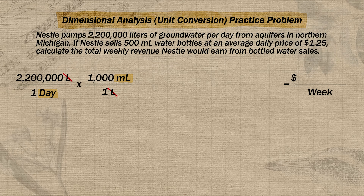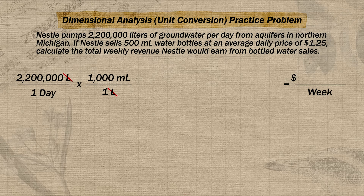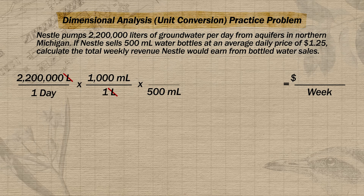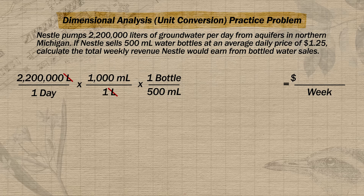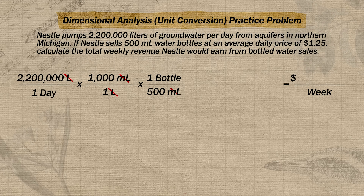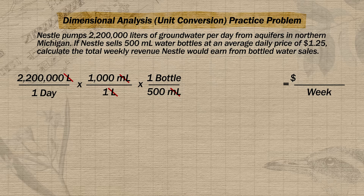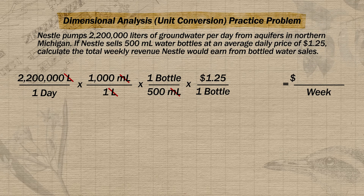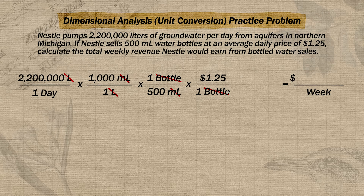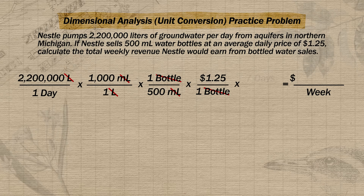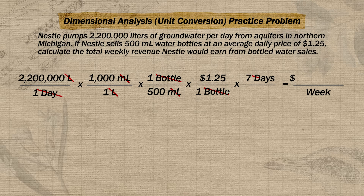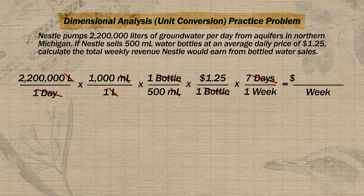Next, we convert milliliters to bottles of water. Since milliliters is on top, we put 500 milliliters on the bottom and 1 bottle on top of our next conversion factor — crossing off milliliters and leaving us with bottles per day. Then we convert to dollars by putting 1 bottle on the bottom and $1.25 on top. Finally, since our answer needs to be in dollars per week, we put 7 days on top and 1 week on the bottom.